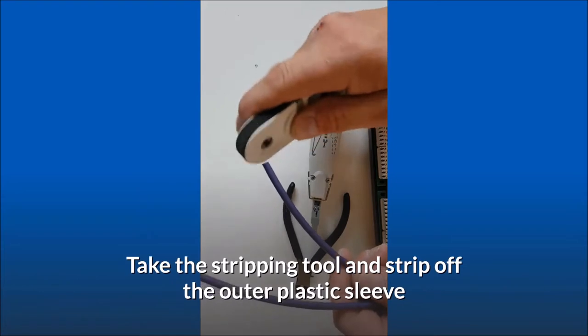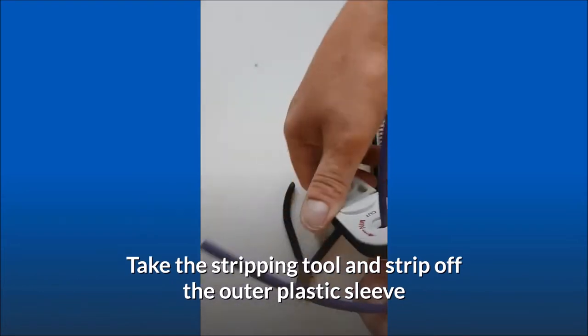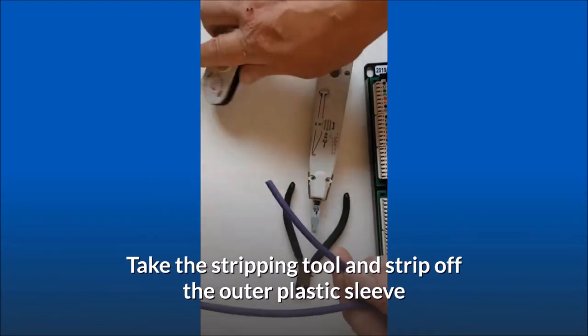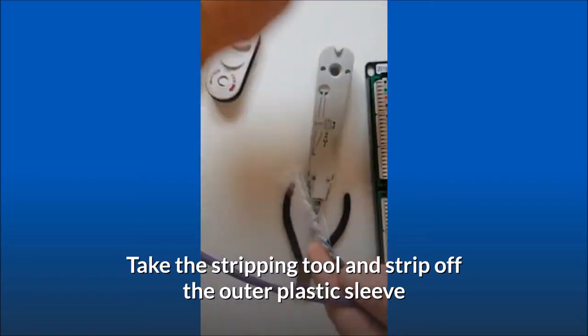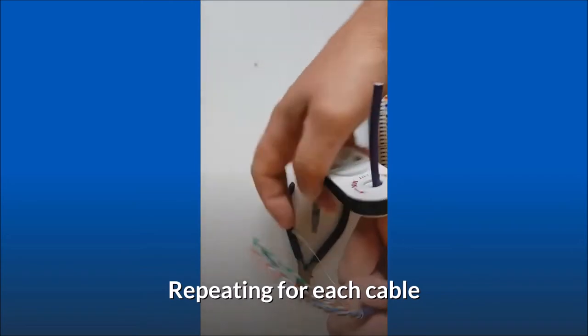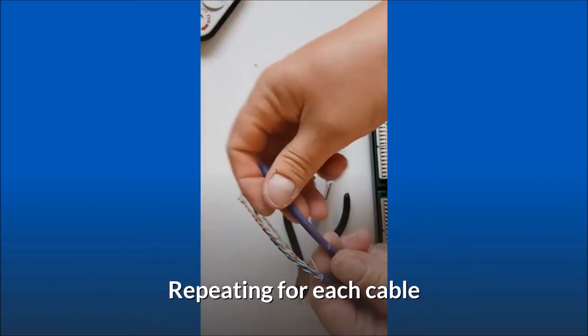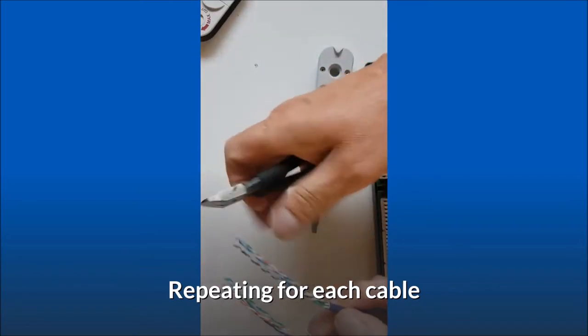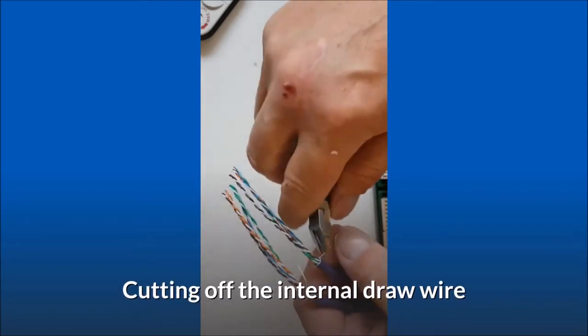Take the stripping tool and strip off the outer plastic sleeve. Repeat for each cable. Cut off the internal draw wire.